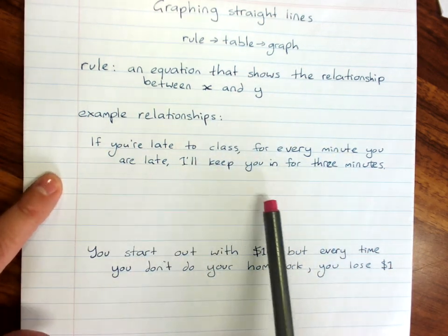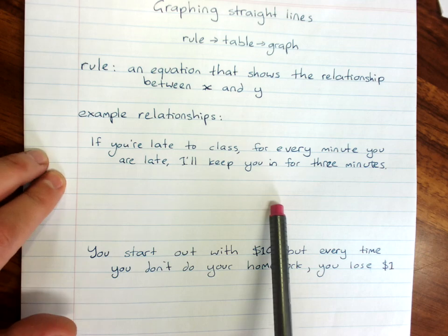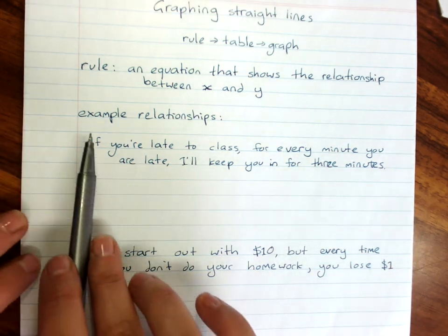The rule for a line is an equation that shows the relationship between x and y. Now I don't need you to be able to get a rule from a relationship, but sometimes it can help us understand.